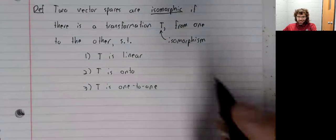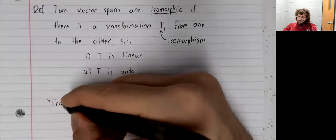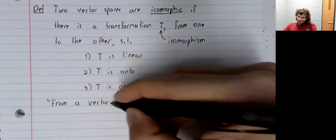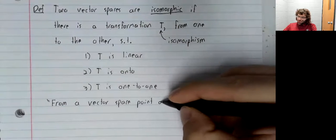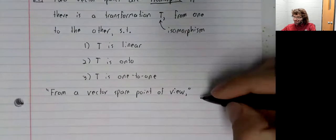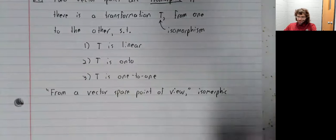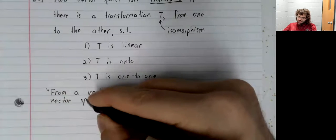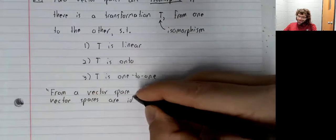And the take home message of this video is that from a vector space point of view, isomorphic vector spaces are identical.